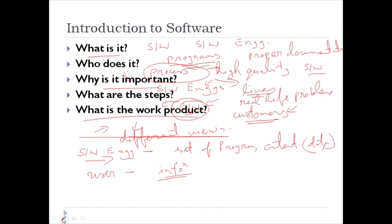So basically, we have tried to answer some key questions: what exactly is computer software or software engineering, who performs it, why is it important, what are the steps (where the software engineering approach is applied), and what are the work products from the point of view of both the software engineer and the user.